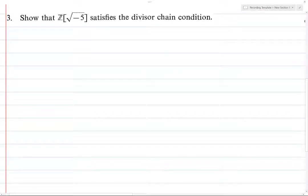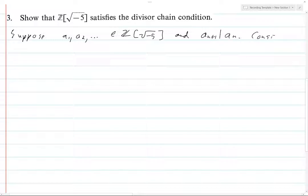Alright, we want Z adjoin the square root of negative 5 to satisfy the divisor chain condition. So suppose a1, a2 are elements in Z adjoin square root of negative 5 and a_{n+1} divides a_n. Consider the norm N(a + √-5 b) which is equal to a² + 5b².